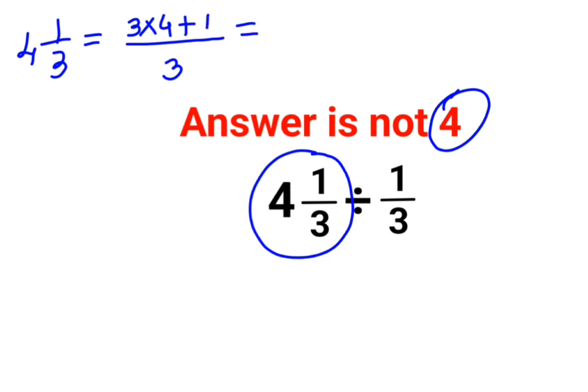And whatever is the product gets added to the numerator. So this then becomes 4 multiplied by 3 is 12 plus 1, the answer is 13 by 3. So, 13 by 3 divided by 1 by 3.